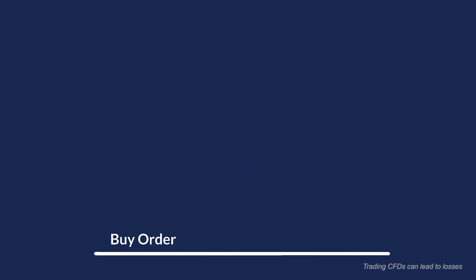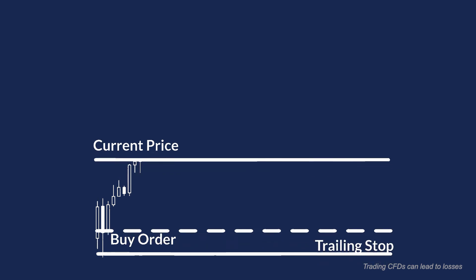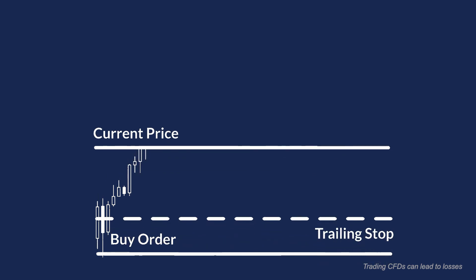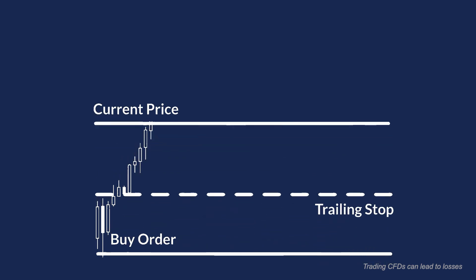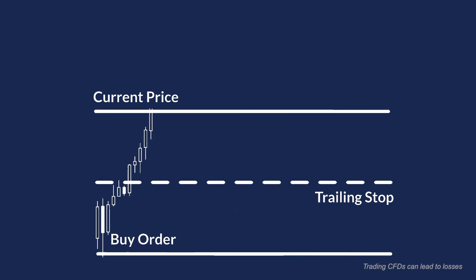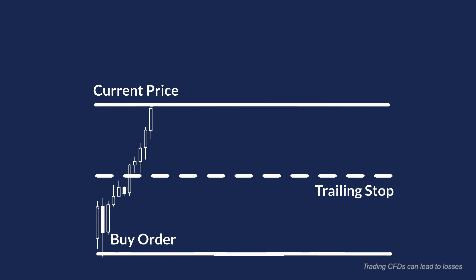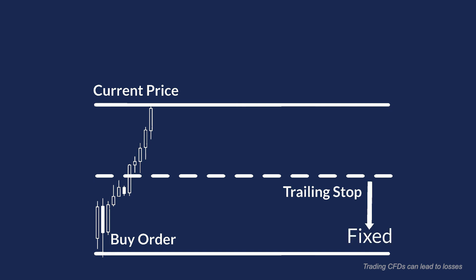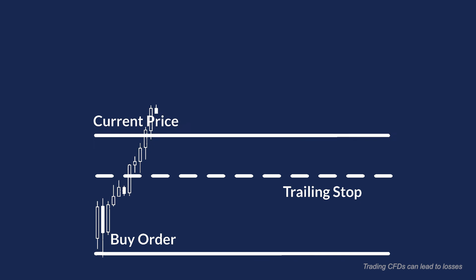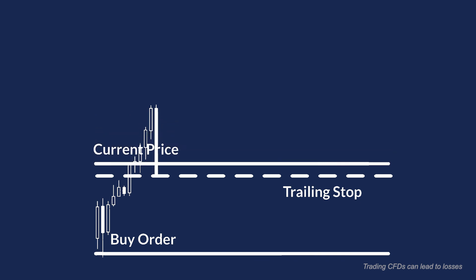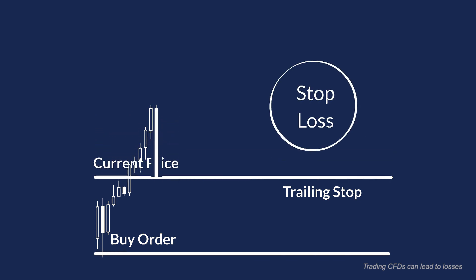If the market keeps moving in the profitable direction, so does the trailing stop, always maintaining the stop loss at a preselected point distance from the current price. If the market stops moving in the profitable direction, the trailing stop keeps the stop loss fixed. If the market goes against the profitable direction, it may eventually reach the stop loss level preset by the trailing stop.